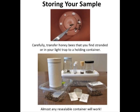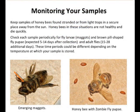When storing your sample, carefully transfer honeybees found stranded or in your light trap to a holding container. Keep samples in a secure place away from the sun. Honeybees in these situations are not healthy and die quickly. Check each sample periodically for fly larvae, maggots, and brown pill-shaped fly pupae.